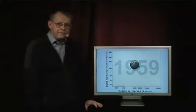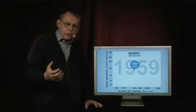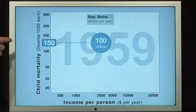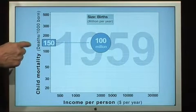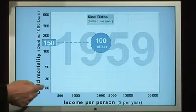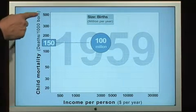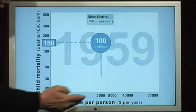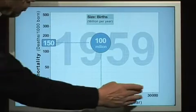This is the world in 1959. The size of this bubble represents the number of children born in the world — 100 million children were born in 1959. On this axis we can see child mortality: 150 deaths per 1,000 children born, with the axis ranging from 20 to 500 deaths per 1,000. This axis shows income per person: $3,000 per year in 1959, ranging from $500 to $30,000.